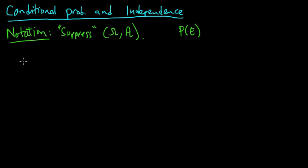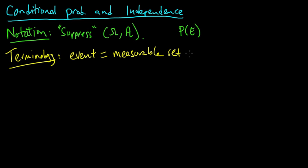And here's another little bit of terminology. We say event to mean a set in our sigma algebra, or in other words, a measurable set, i.e. a set in A. Whatever sigma algebra we happen to be working with at the time, we'll say E is an event, and we mean just this.